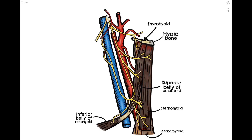Let's take a second to go through each of them one by one. At the top we have our thyrohyoid muscle, which goes on to attach to the thyroid cartilage. More superficially we have our sternohyoid muscle, which attaches to the sternum and the end of the clavicle. Right next to that we have our omohyoid muscle, which has two bellies that are united by an intermediate tendon in the middle. This tendon is connected to the clavicle by a fascial sling.